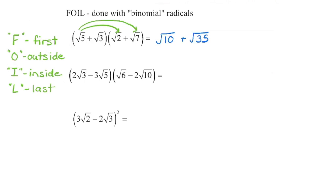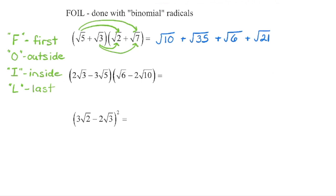Next are the outside terms — think of it like a house, these are on the outside. We multiply 1 times 1 to get a coefficient of 1, and 5 times 7 to get 35. Then the inside terms: 3 times 2 gives a radicand of 6. Finally, multiply the last term in each bracket: 1 times 1 is a coefficient of 1, and 3 times 7 is 21.